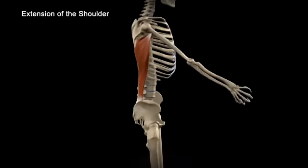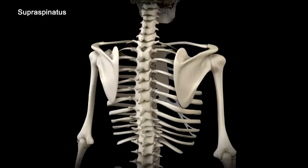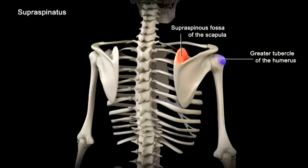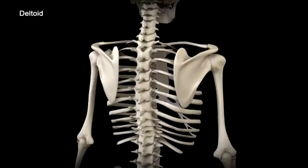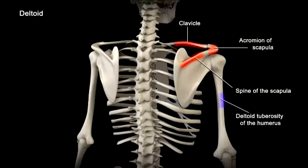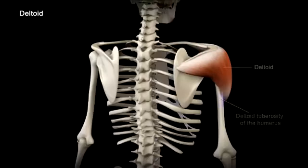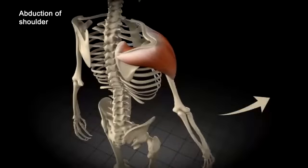The prime movers of shoulder adduction, the pectoralis major and coracobrachialis, are opposed by the shoulder abductors. The shoulder abductors are the supraspinatus and deltoid. The supraspinatus originates at the supraspinous fossa of the scapula and inserts on the greater tubercle of the humerus. The deltoid muscle has three points of origin — clavicle, acromion of the scapula, and spine of the scapula — and inserts on the deltoid tuberosity of the humerus. These two muscles act to abduct the shoulder.